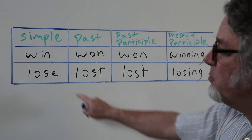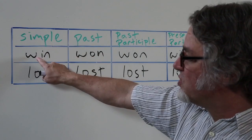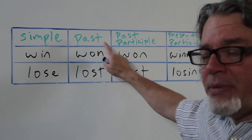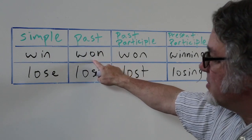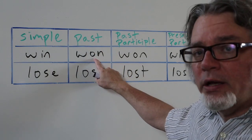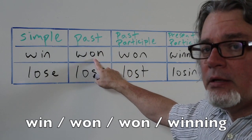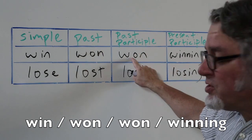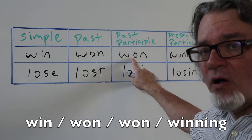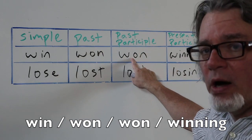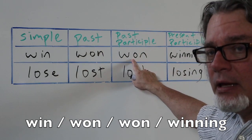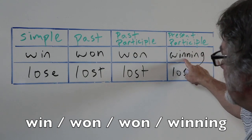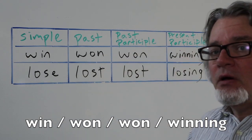Here's the verb win in the simple form. In the past tense, it's won. In the form of a past participle, it's also won. And the present participle is winning.